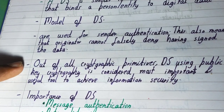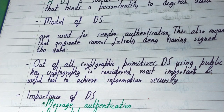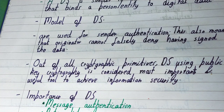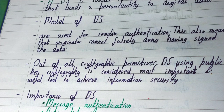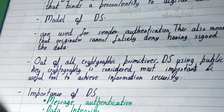Among all cryptographic primitives, digital signatures using public key cryptography — two keys: a private key for encrypting and a public key for decrypting — are considered the most important and useful tool to achieve information security. There are many ways to send secure data online, but the best and most secure way is through digital signatures.